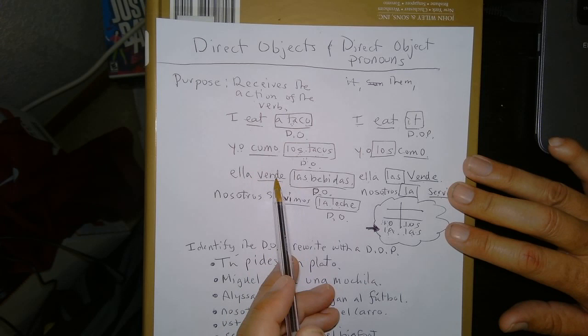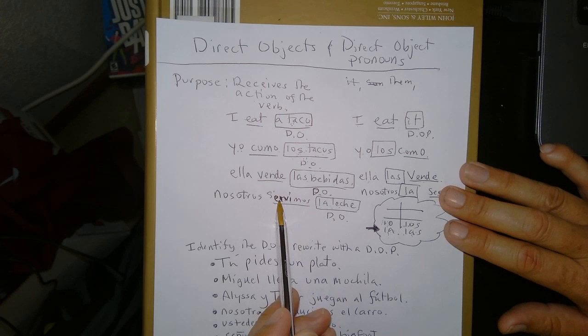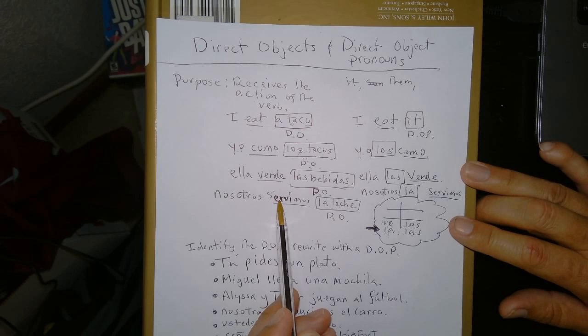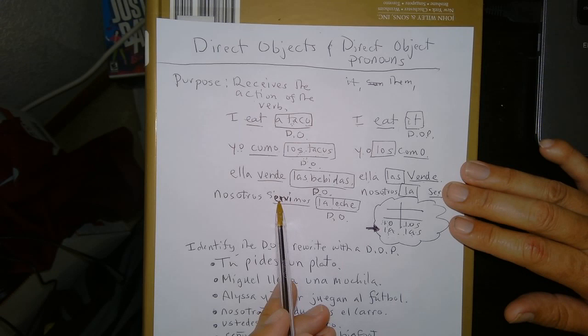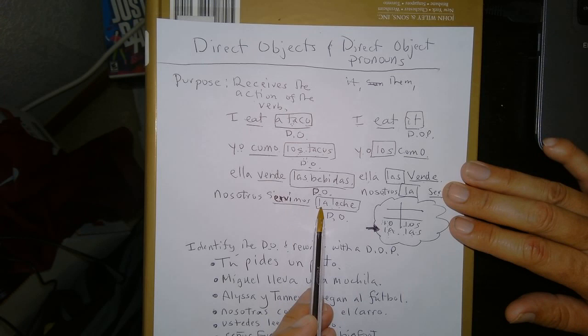Ella vende las bebidas. Direct object is what's being sold. Nosotros servimos. Now notice that it's a stem changer. We talked about those recently. We don't stem change this one because, as you know, we don't stem change outside the boot. So servimos, nosotros, is not stem changing here. It's an IR verb. So it's I-M-O-S. And la leche is the direct object. Receives the action.